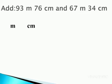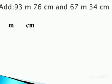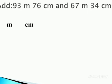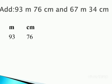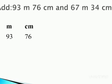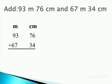First, write down the units: meter and centimeter. Write 93 meter in meters column and 76 centimeter in centimeters column. Similarly, 67 meter in meters column and 34 centimeter in centimeters column.